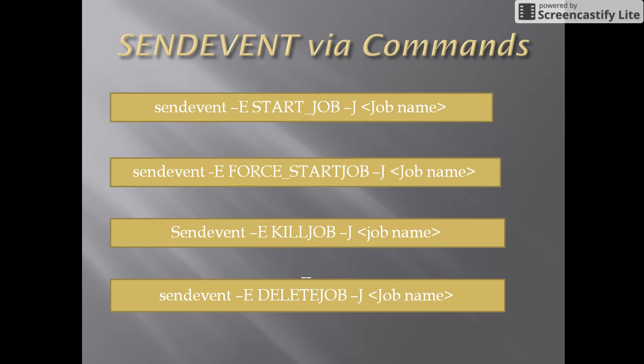The third command is: send_event -e kill_job -j job_name. This will kill the process ID of the job and the status of the job will go to terminated.